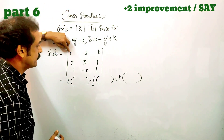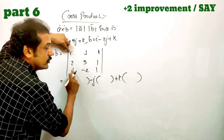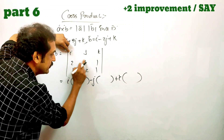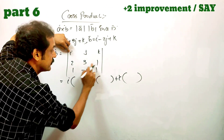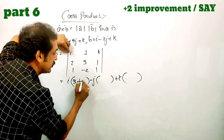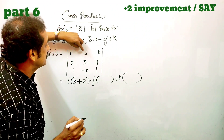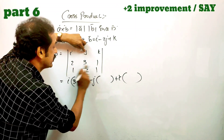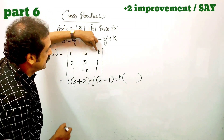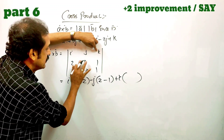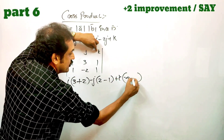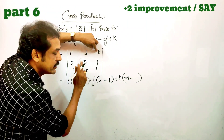For i: the minor gives 3 times 1 minus minus 2 times 1, which is 3 minus minus 2 equals 5. Then for j: minus j bracket 2 times 1 minus 1 times 1, which is 2 minus 1 equals 1. Then for k: 2 times minus 2 minus 4, giving minus 4 minus minus 4, and the product is minus.